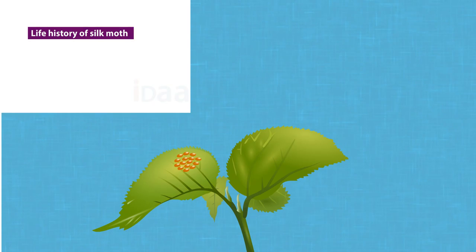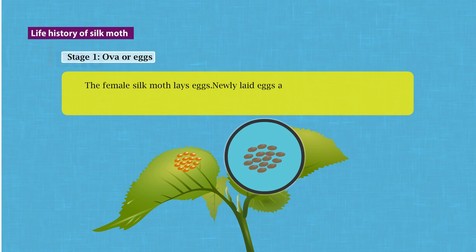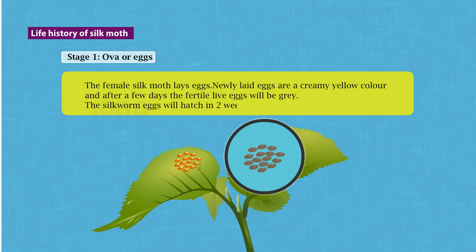Stage 1 — Ova or Eggs: The female silk moth lays eggs. Newly laid eggs are a creamy yellow color, and after a few days, the fertile live eggs will turn gray. The silkworm eggs will hatch in two weeks.